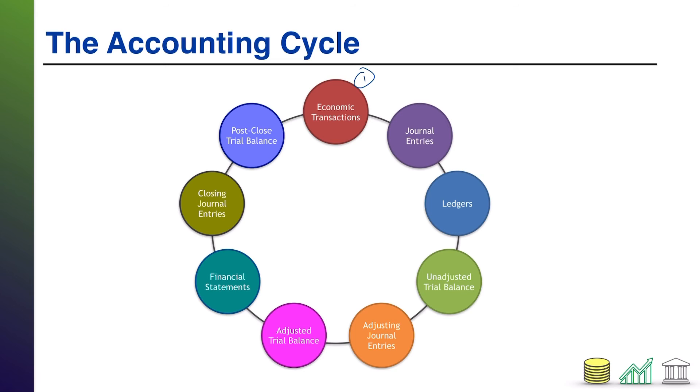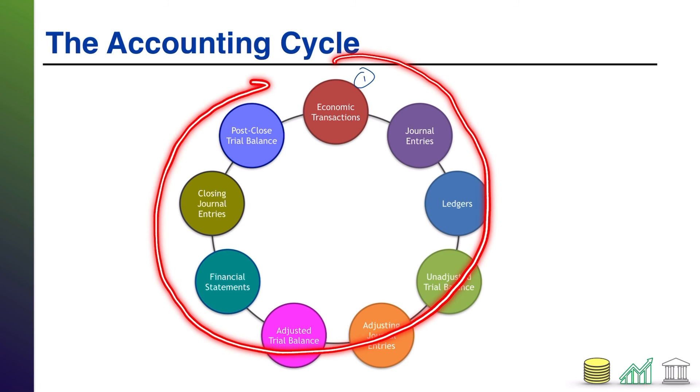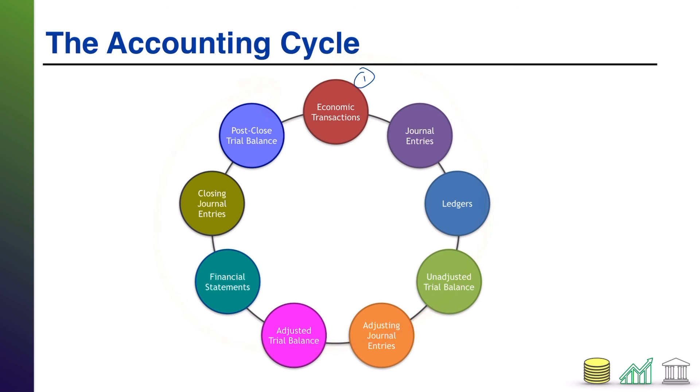Once the financial statements are complete, there's going to be a set of what we call the closing journal entries. So these are additional journal entries that are made to essentially tidy up everything at the end of the accounting cycle. Once you've tidied everything up, you produce one more trial balance just to confirm that everything looks the way it should, and then the cycle starts over with new economic transactions for the new reporting cycle. And that is the accounting cycle in a nutshell.